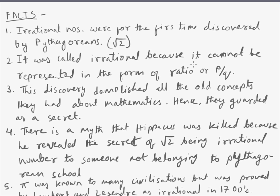Some more facts. Irrational numbers were for the first time discovered by the Pythagoreans as root 2. It was called irrational because it cannot be represented in the form of ratio P by Q. This discovery demolished all the old concepts they had about mathematics. Hence, they guarded it as a secret. There is a myth that Hippasus was killed because he revealed the secret of root 2 being irrational number to someone not belonging to Pythagorean school. Pi was known to many civilizations but was proved by Legendre and Lambert as irrational in the 1700s.